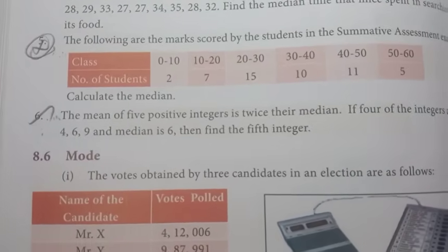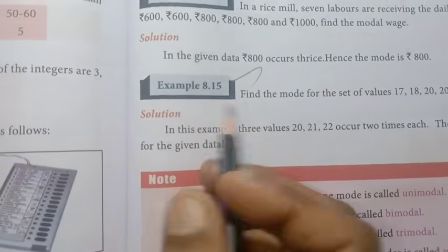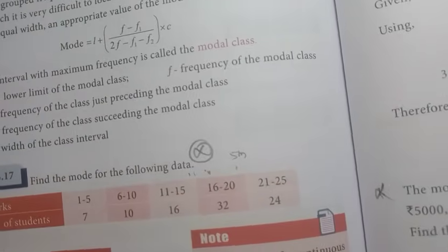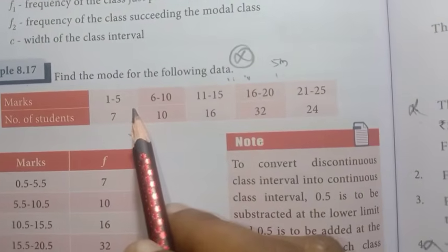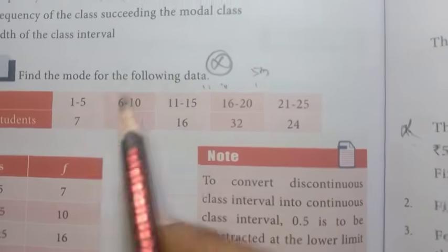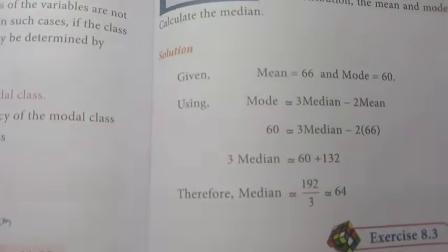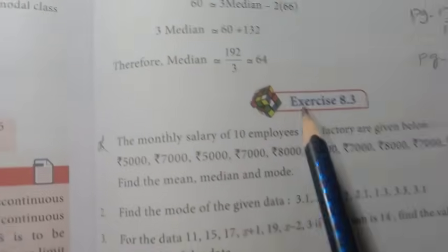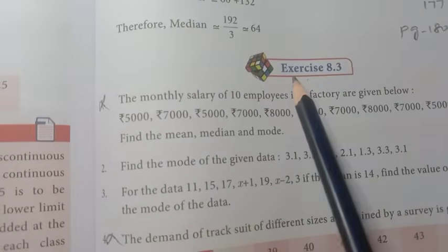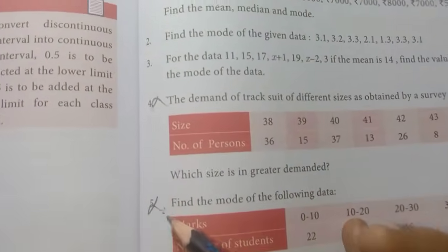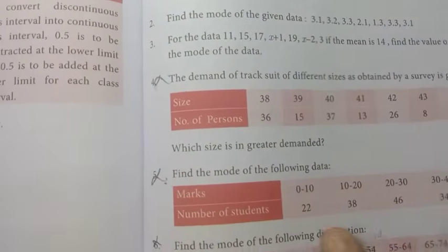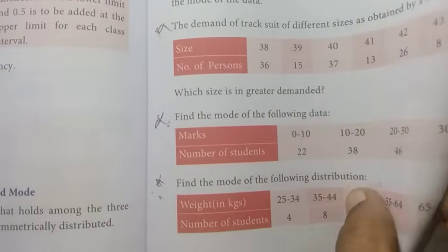Page number 285, Example 8.15 important. Page number 286, Example 8.17 important. Page number 287, Example 8.18 important. Exercise 8.3: 1st, 4th, 5th, and 6th — important questions.